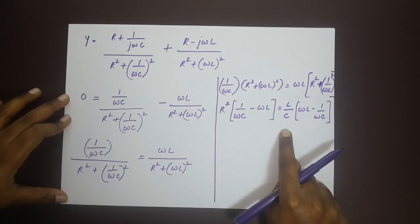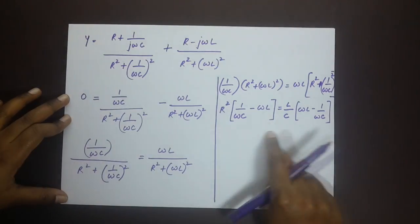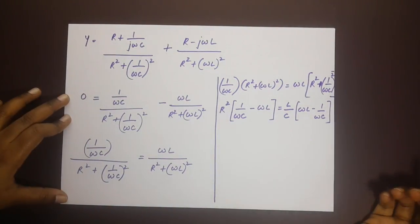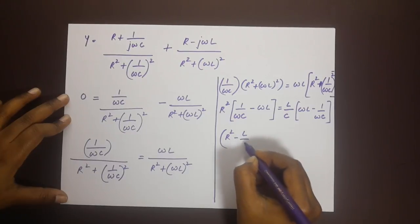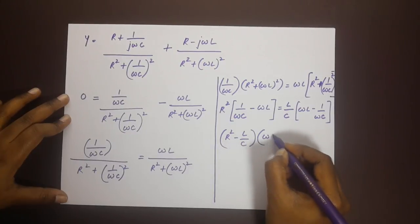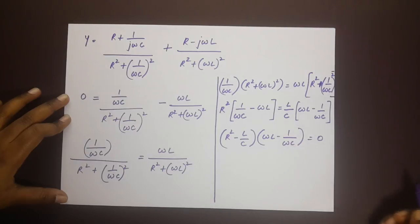What we can do is bring this on the other side and write this in terms of factors. This would be R square minus L by c into ωL minus 1 by ωc is equal to zero.